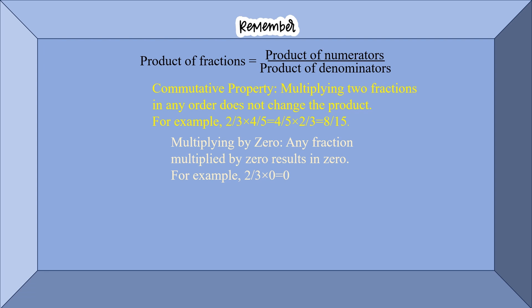Multiplying by zero: any fraction multiplied by zero gives you zero. For example, 2/3 times 0 is equal to 0. Multiplying by one: any fraction multiplied by one remains unchanged. For example, 2/3 times 1 is same as 2/3.